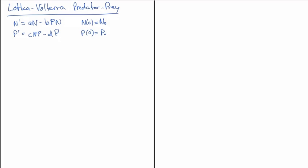I've included an initial condition for completeness, but I'm not going to think too much about that. I'm going to look at the scales for the problem that come from the coefficients a, b, c, and d, and use those to consider how I'm going to non-dimensionalize the system of equations.